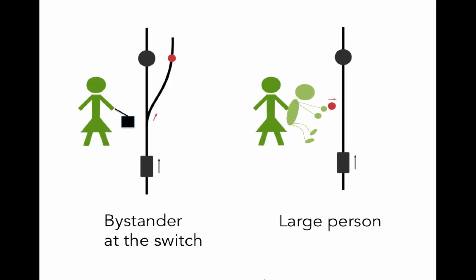Might it be that in the bystander at the switch case the bystander less directly kills the one person and that they are just pulling a switch whereas in the large person case the bystander seems to be more directly killing the person.